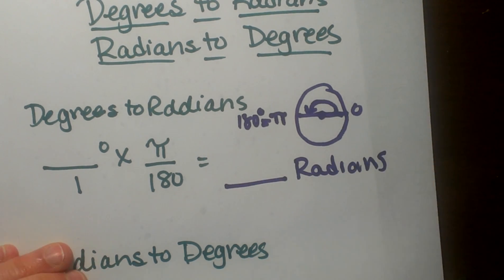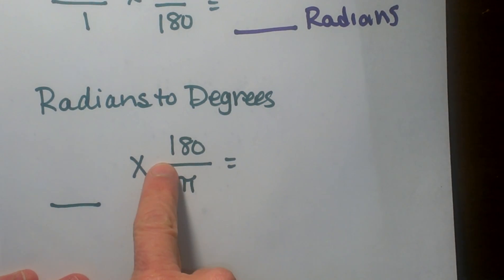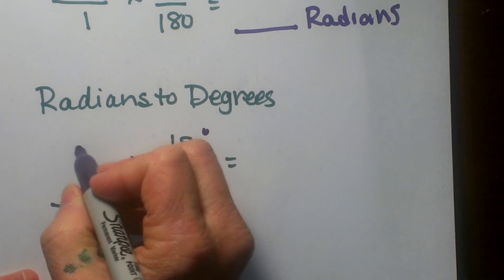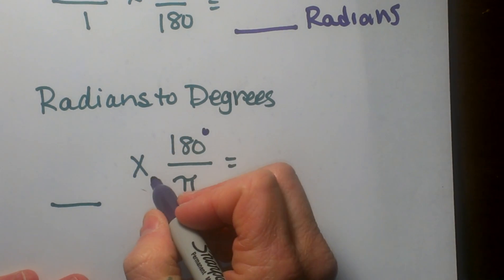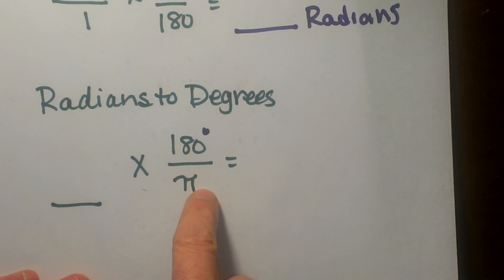Now what if I'm given the problem in radian measure and I want to convert it back to degrees? You're going to set your radians here and multiply it by the same ratio, but it's the reciprocal. So I always think about it this way.